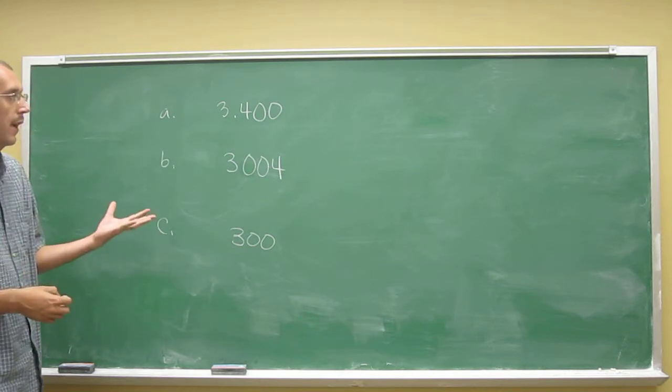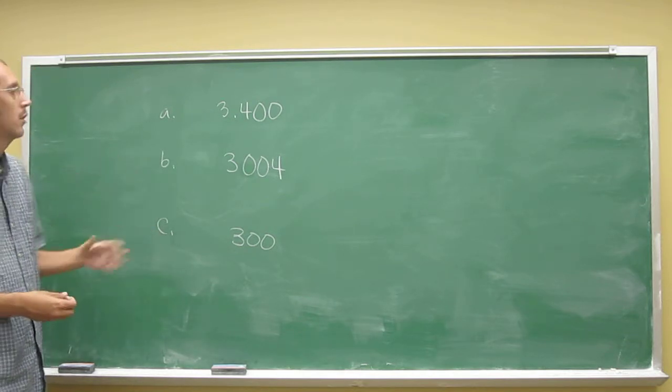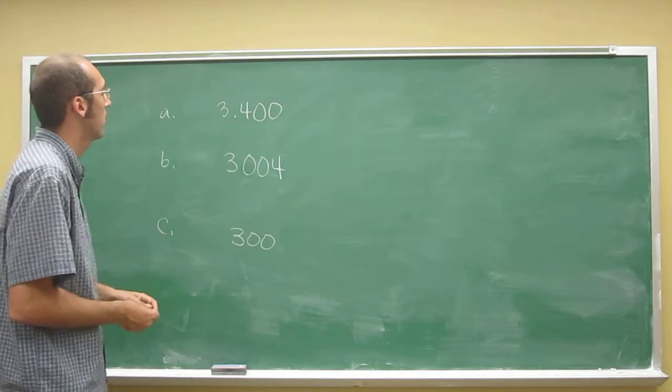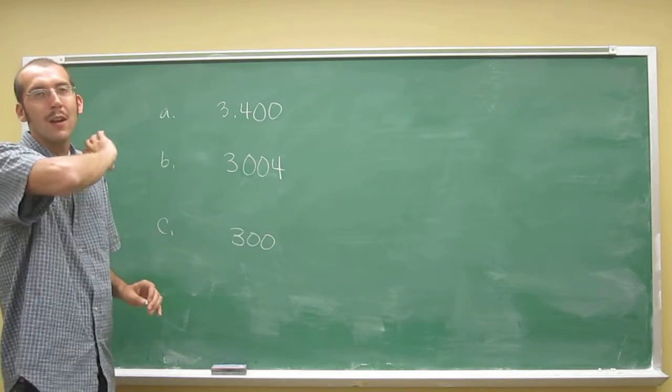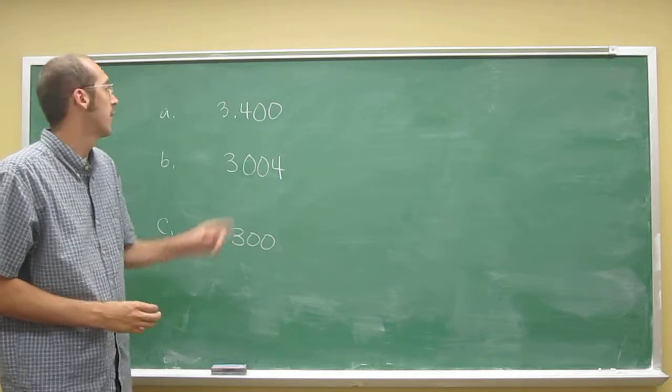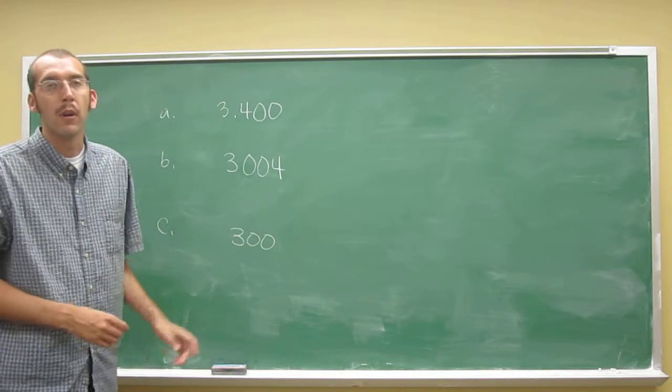If you've got a decimal point in your number, like this one does here, 3.400, then that means all of the zeros after the first non-zero number are significant.